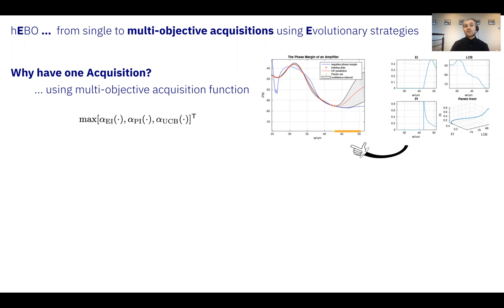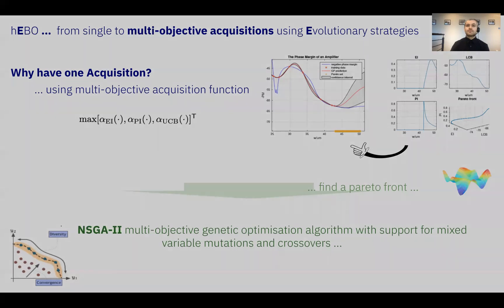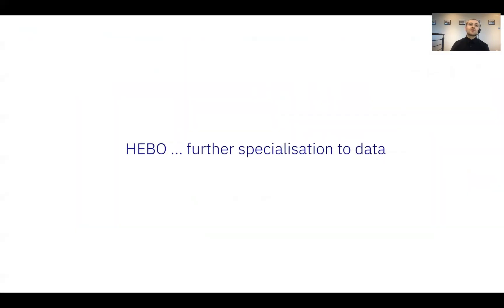But how do we find this Pareto set? We use a multi-objective evolutionary method, NSGA-II, to find a Pareto set. Importantly, this method supports mixed variable mutations and crossovers, further customizing Hibo to the competition data.